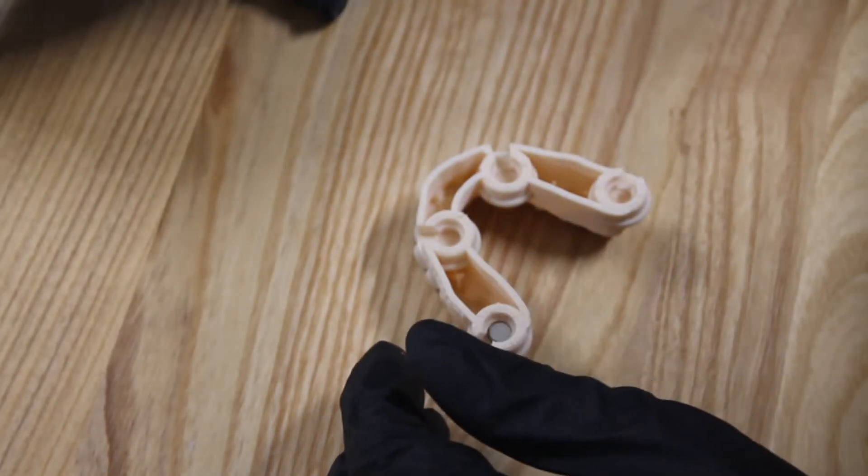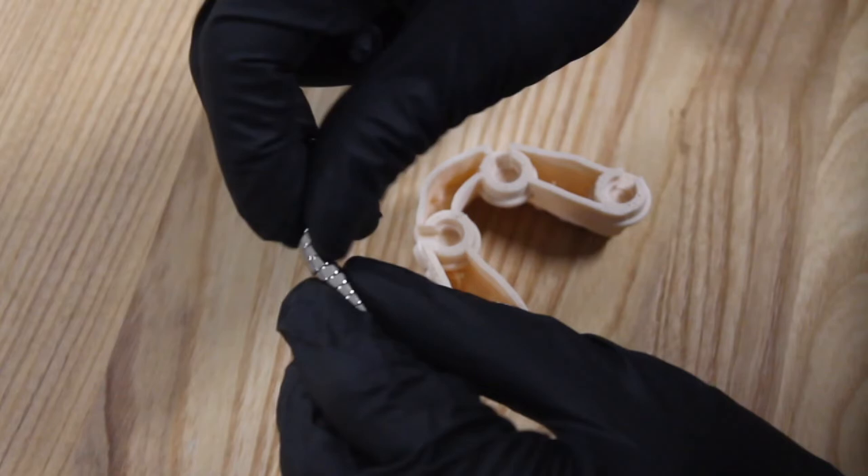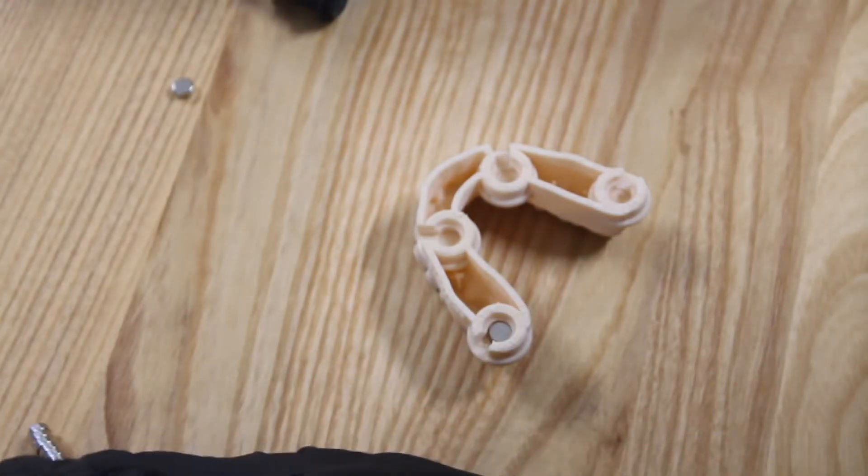The glue jet tool ensures proper placement of the magnets, guiding you to insert them accurately while maintaining the correct pole alignment.